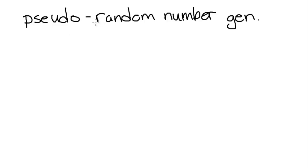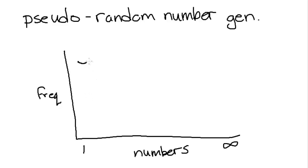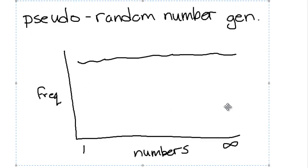What a pseudo-random number generator is, is an equation that, when you put in a series of numbers into it, will create a uniform distribution of numbers. When you graph the results, you get a fairly uniform distribution, which means the chance of getting any number from this equation is the same as getting any other number. Which means that it looks like it's random, although it's not random.